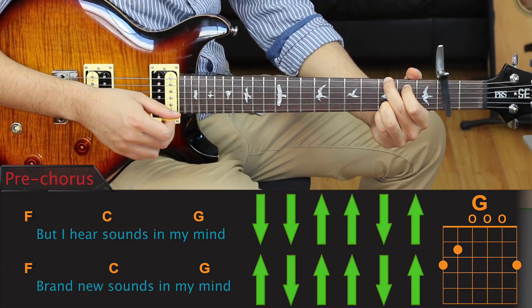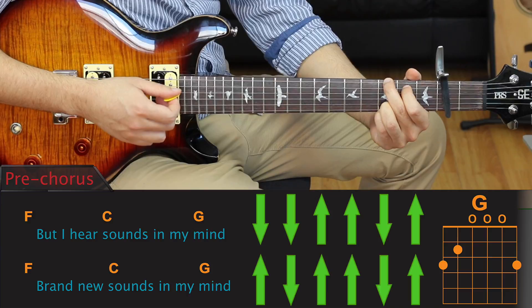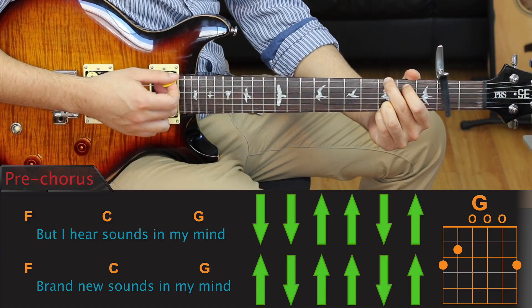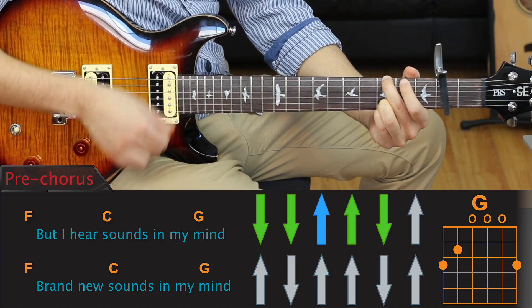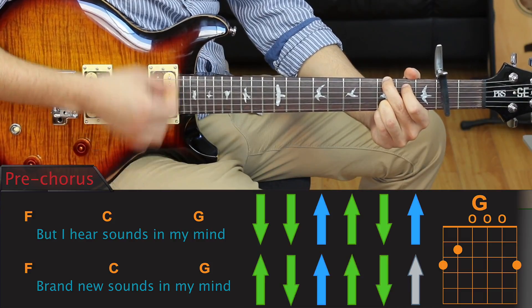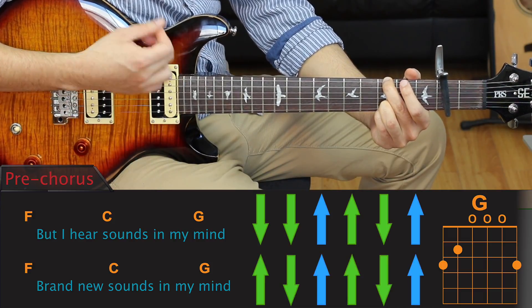If you want to add a little bit more substance to your G chord, you can try lifting up your index finger every third strum like this. Now let's put that all together.